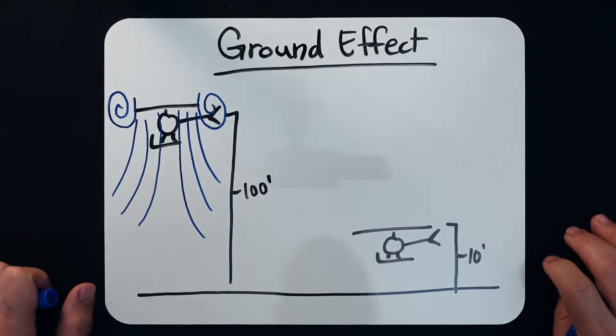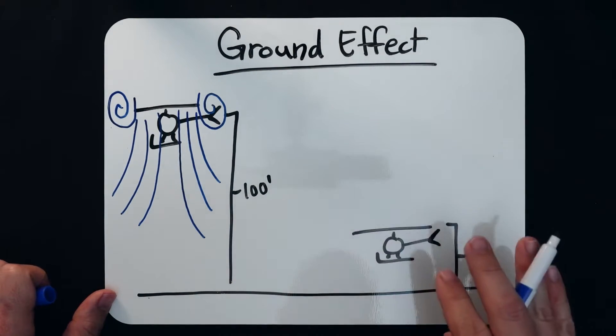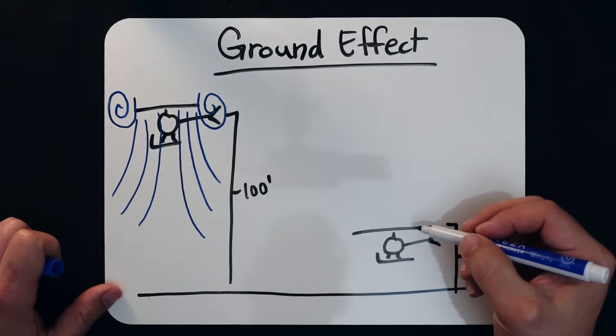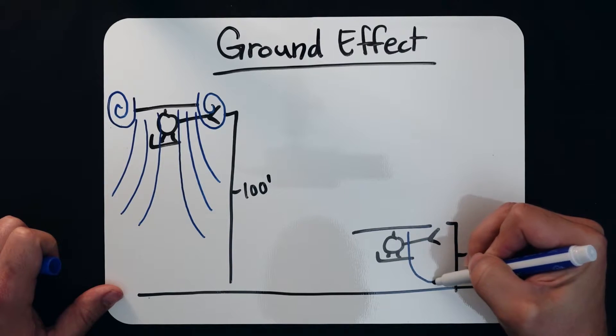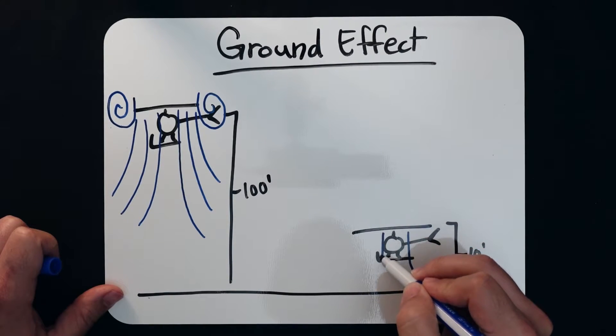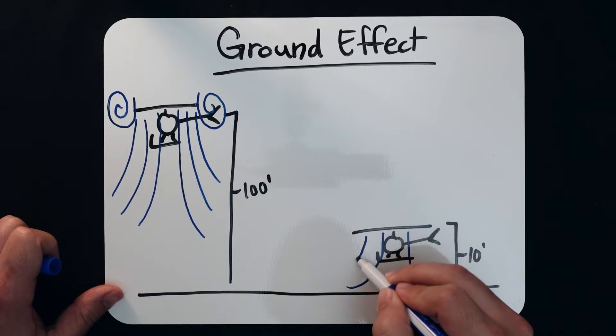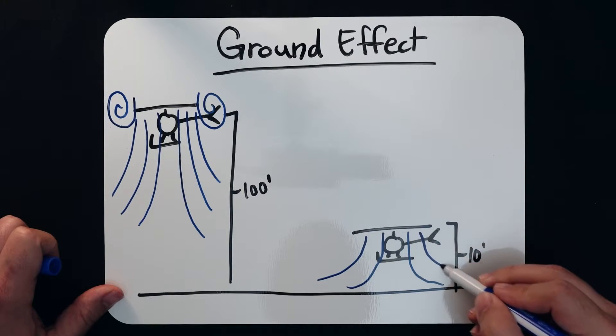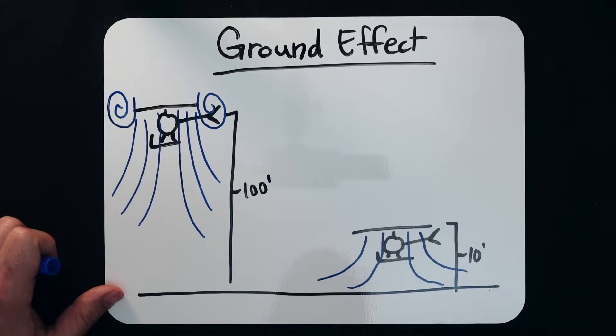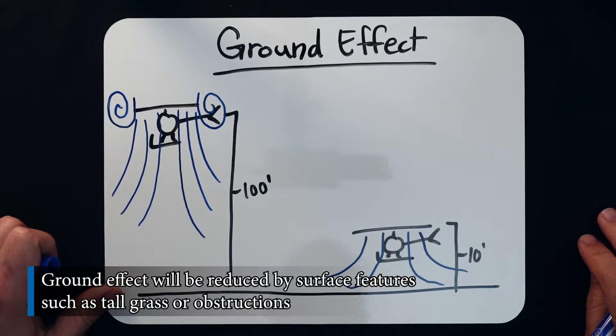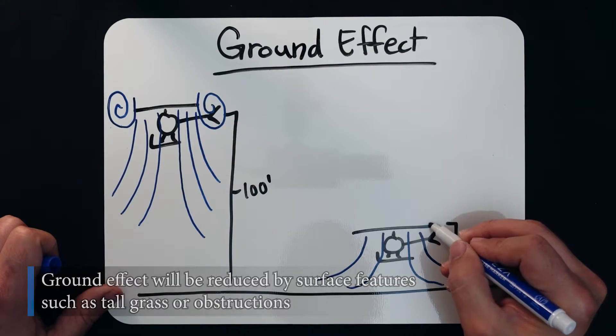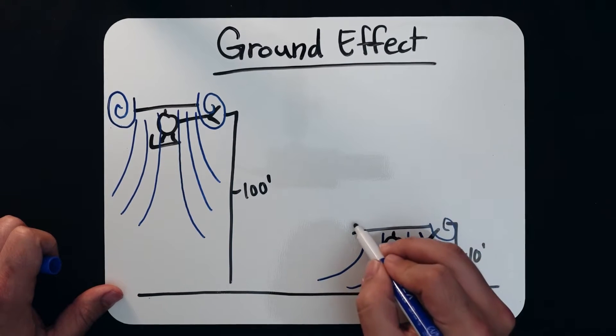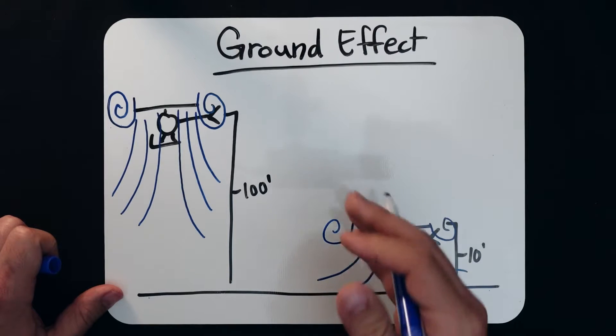Okay, now moving over to the IGE, the in-ground effect hover, the induced flow will start, but due to the ground, it's going to be pushed outwards. So it is not allowed to propagate downwards as much as in the case of the out of ground effect helicopter. We still get these wingtip vortices, but they don't build as much either because of the ground.